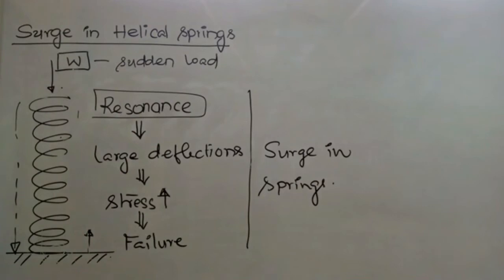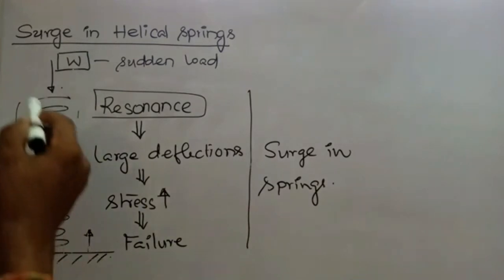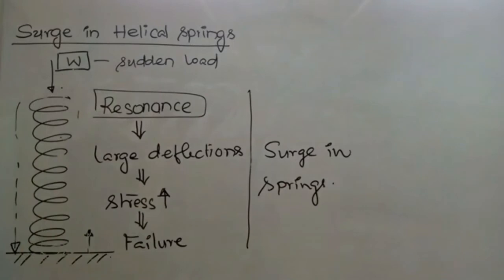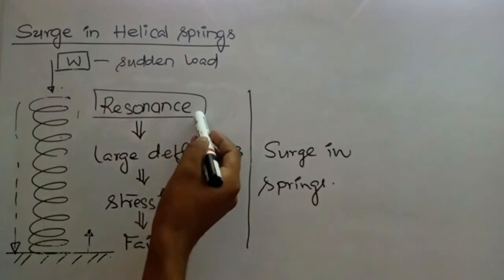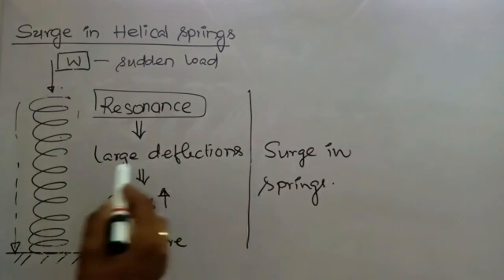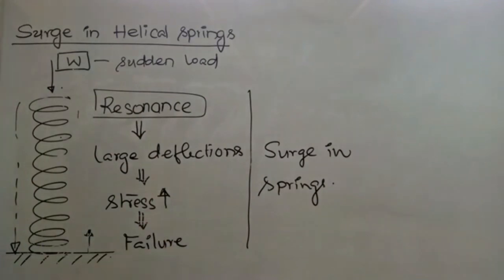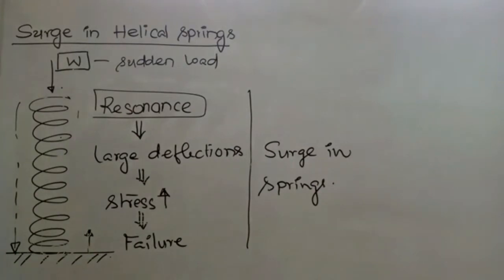When the time of propagation of this deflection wave equals the time interval between suddenly applied loads, resonance occurs. Resonance causes larger deflections, which produce higher values of stresses in the spring, leading to failure or premature failure of the spring. This phenomenon is called surging in spring, and it is a dangerous phenomenon that must be avoided.